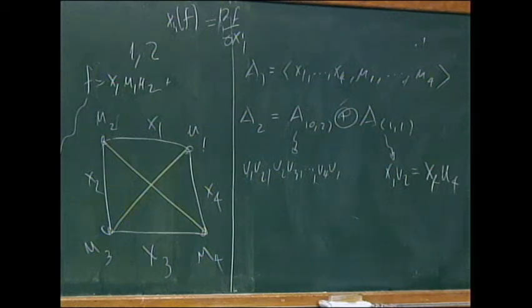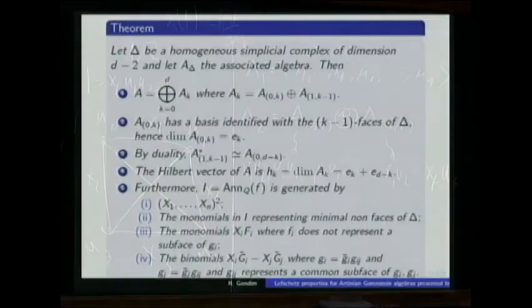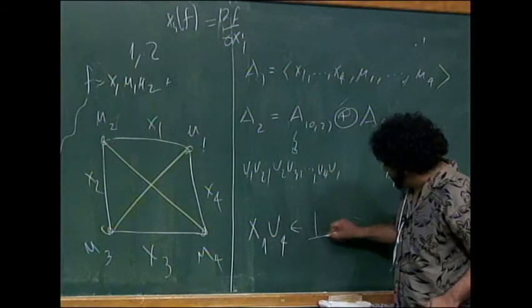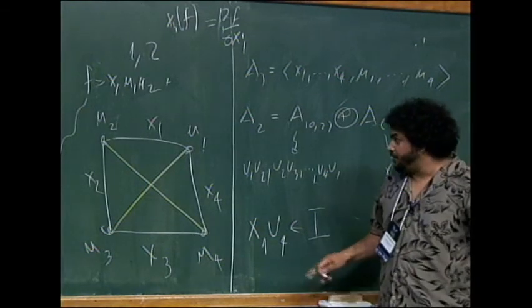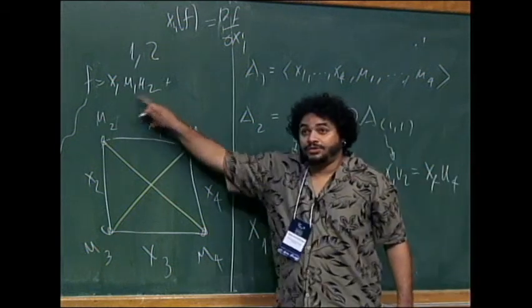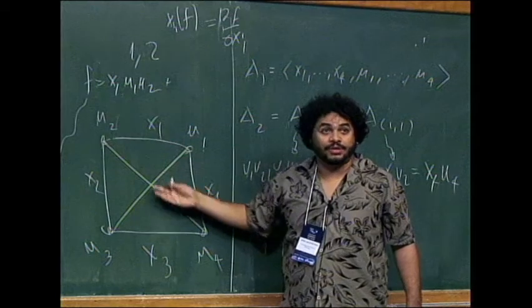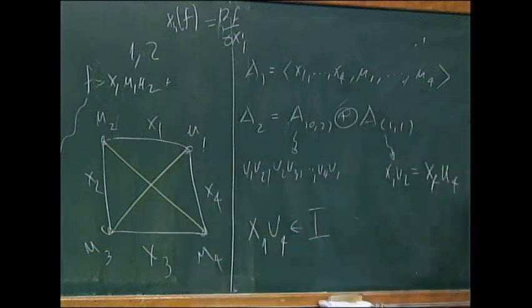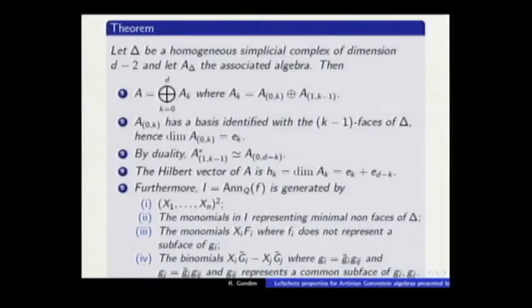The monomials x_i F_i, for example x_1 u_4, belong to the annihilator because when you take the derivative with respect to x_1, you do not have u_4. You can see it from the graph, from the simplicial complex. And also, these differences belong to the annihilator.